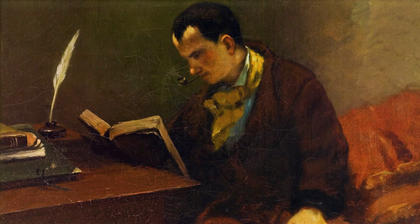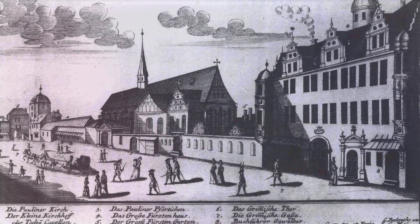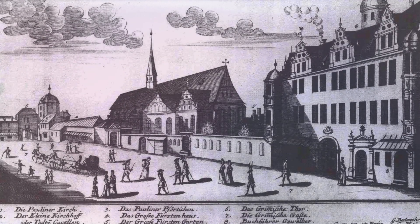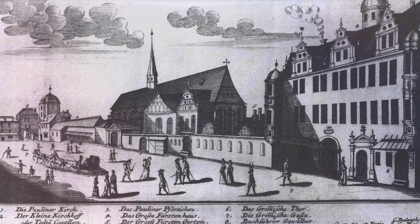Leibniz's formal education was equally impressive. He entered the University of Leipzig at just 14, studying philosophy and law. His early writings reveal a mind eager to synthesize different schools of thought, finding connections where others saw contradictions. His ambitions led him beyond the confines of academia.